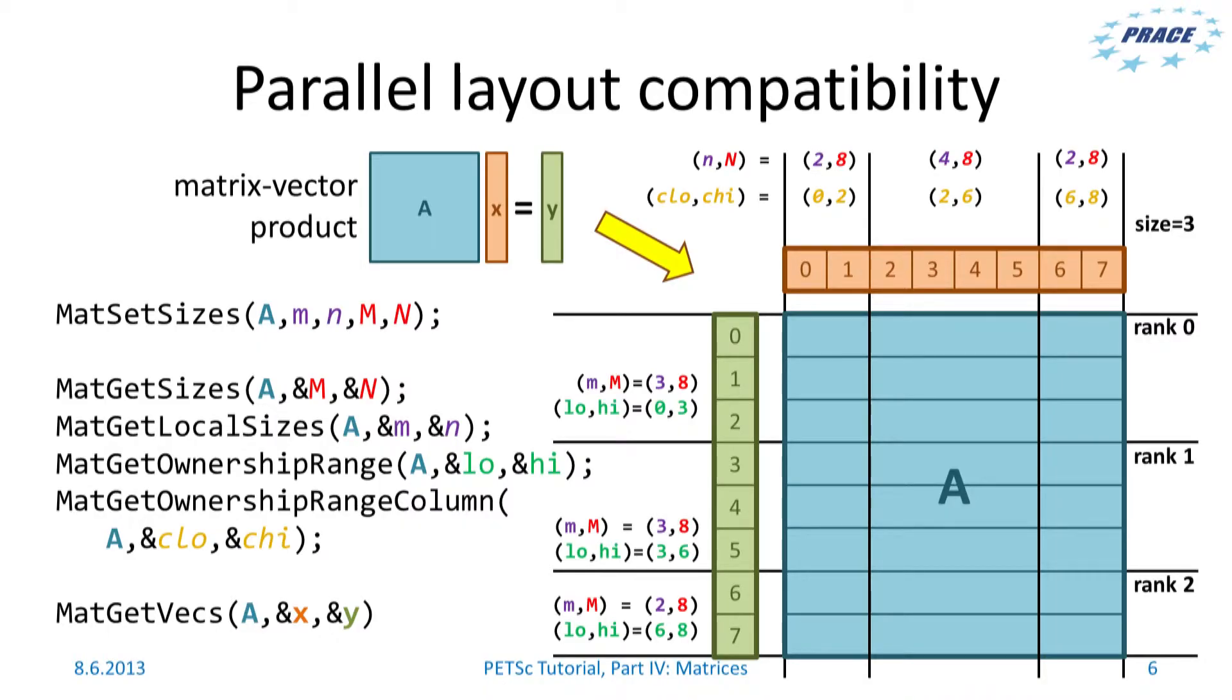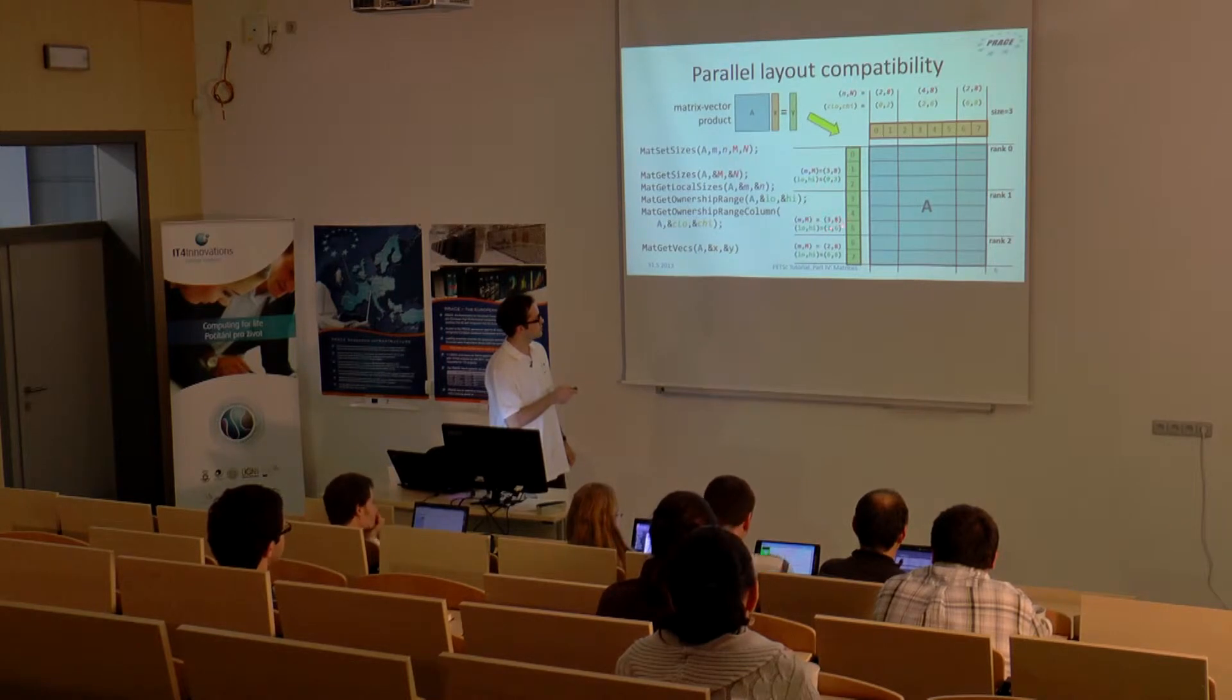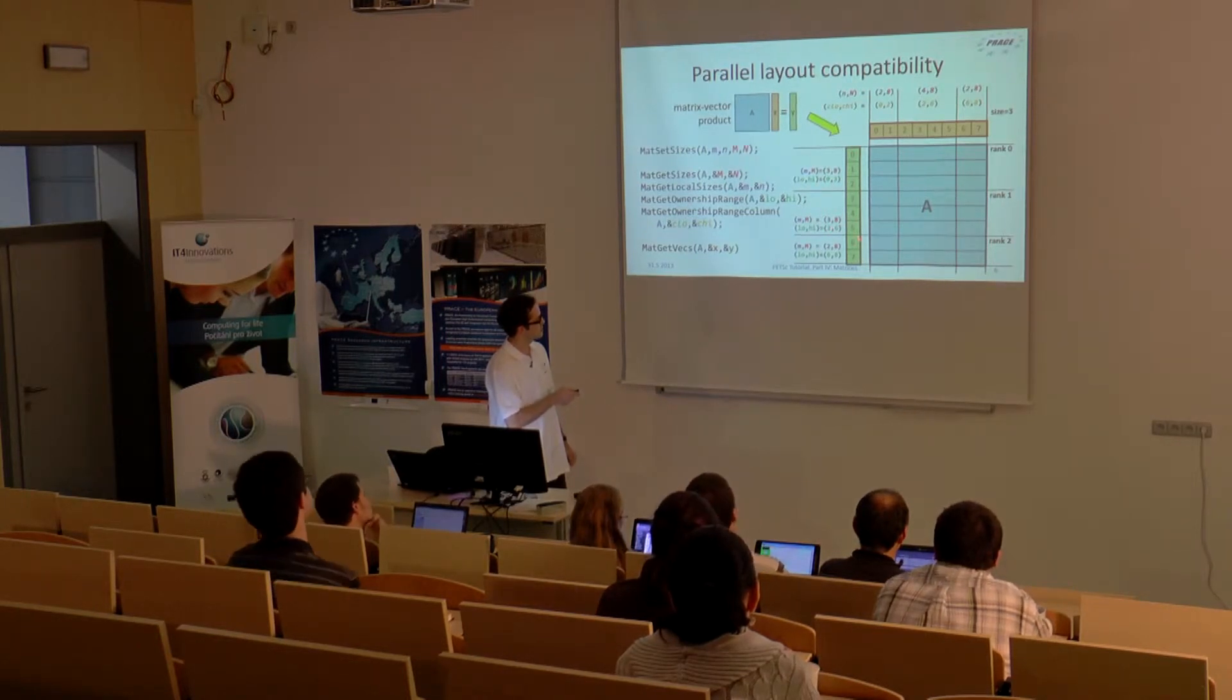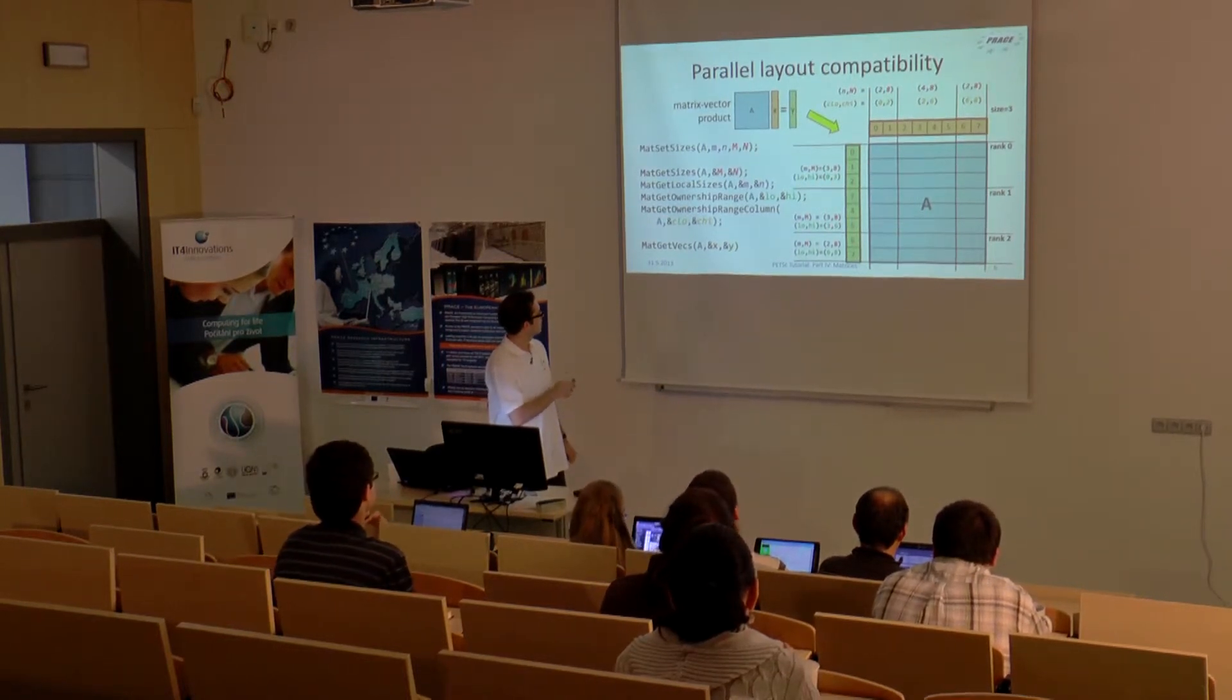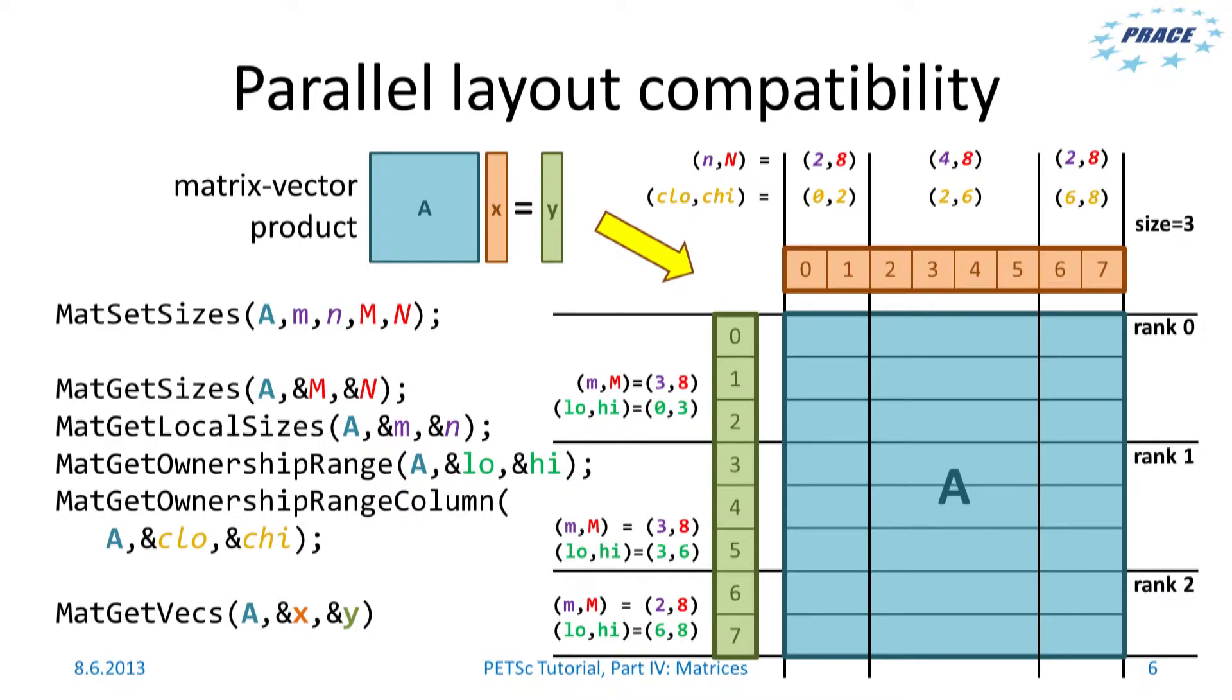You can query the local sizes using MatGetLocalSize, the global size using GetSizes, and you can again get the ownership range of rows. For example, on rank 1 you get here 3 and 6. And for columns you have MatGetOwnershipRangeColumn.